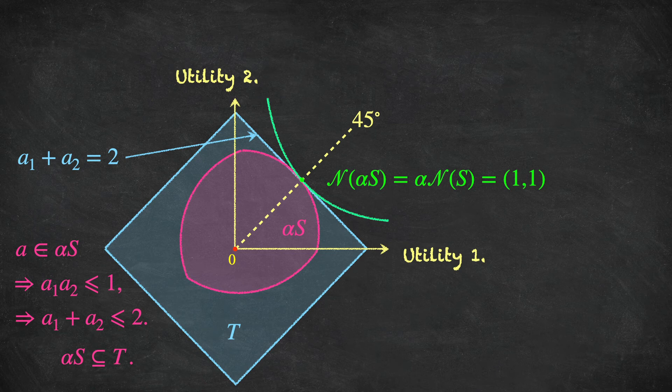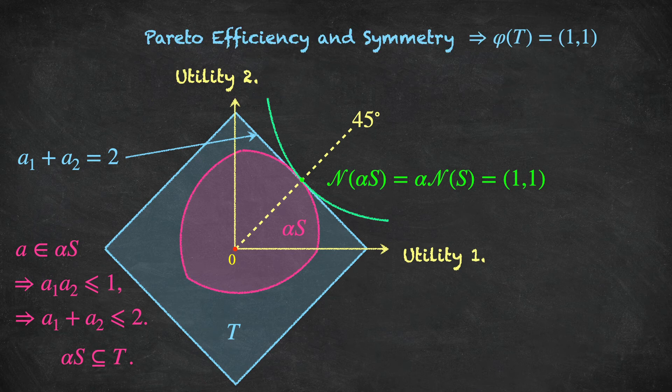So what can we say about the bargaining game capital T? It's symmetric, and phi satisfies the axiom of symmetry, so the solution must lie somewhere along the 45-degree line. Also, phi satisfies the Pareto efficiency axiom, so it must be an undominated alternative along the 45-degree line — and clearly this occurs at the point (1, 1). So our solution concept phi coincides with the Nash bargaining solution, and they are both equal to (1, 1).